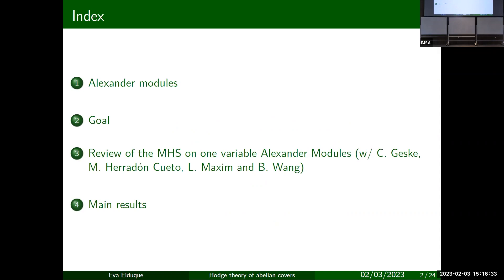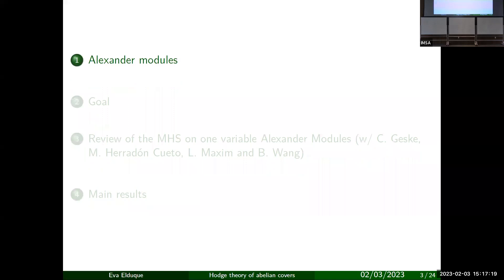This is the outline of the talk. First I'll introduce what Alexander modules are — these are abelian covers of algebraic varieties. Then I'll state the goal — what I want to do with them. In part three, I'll review previous work together with Christian Gaskey, Moisés Aradon Cuento, Lauric, Maxim, and Botan, on an exhaustive structure we put on the one-variable Alexander module. These are a particular kind of deck-transformation link covers I'll be considering. Then we'll move on to the main results of the generalization that's currently work in progress.